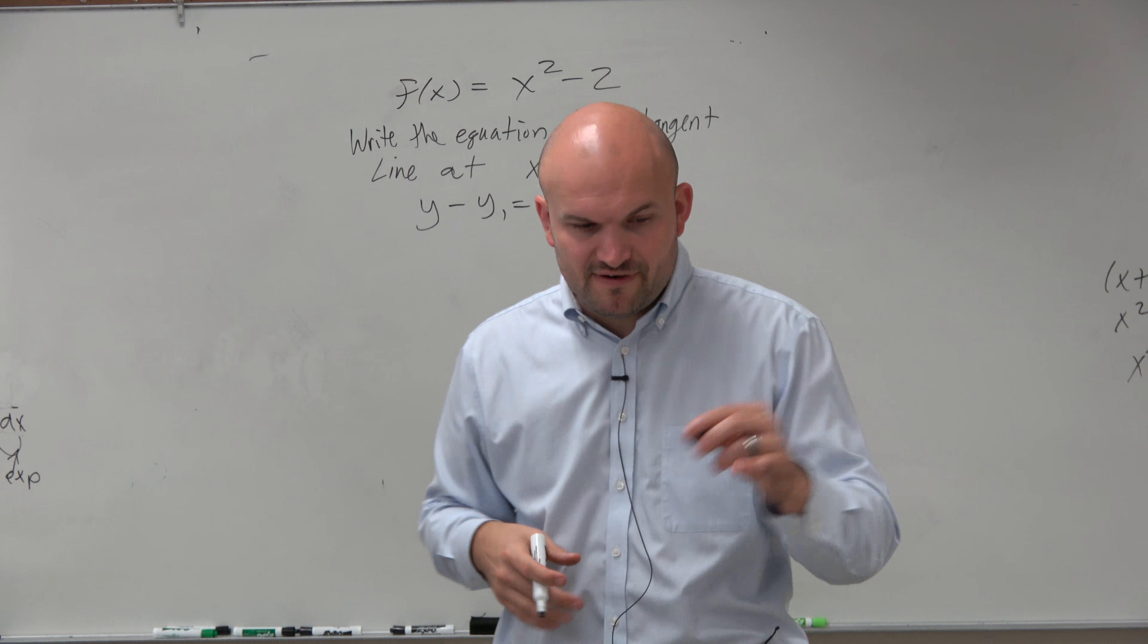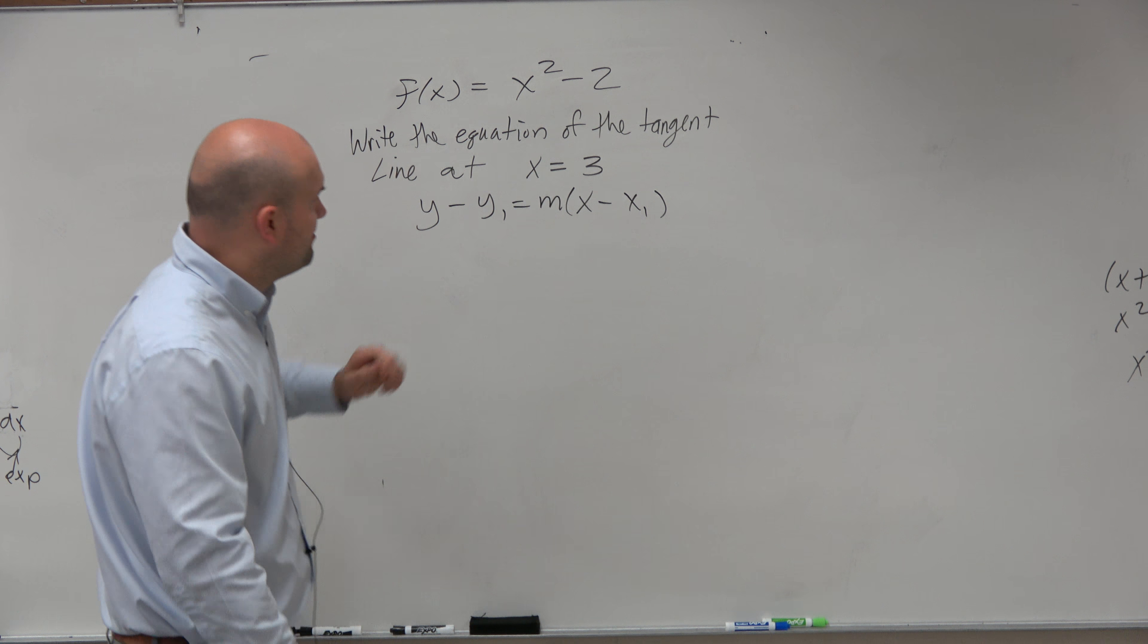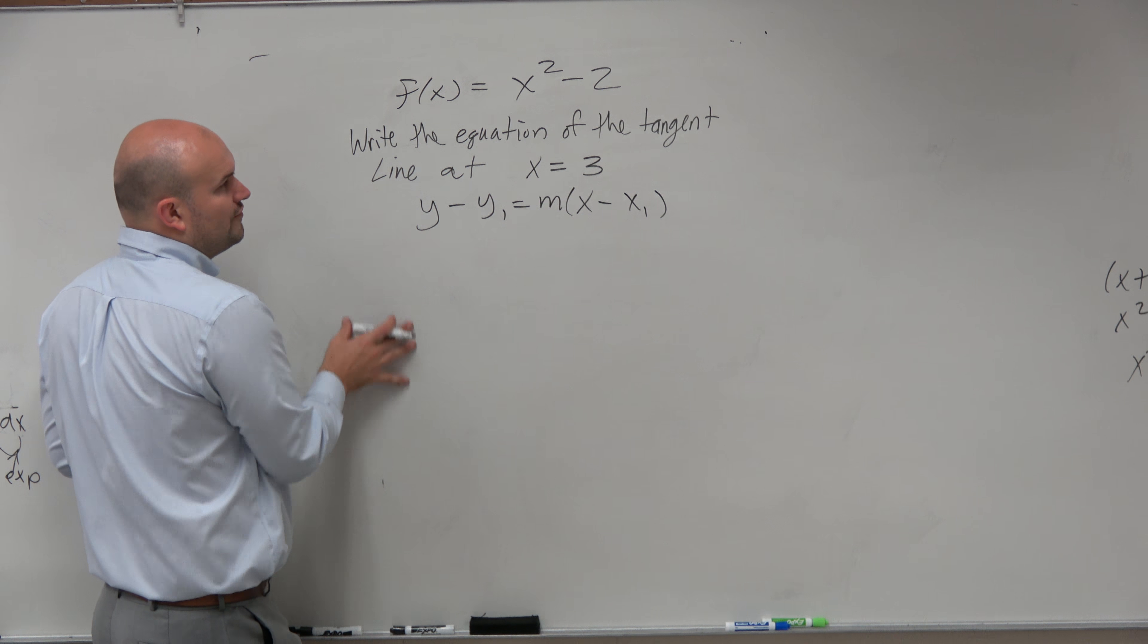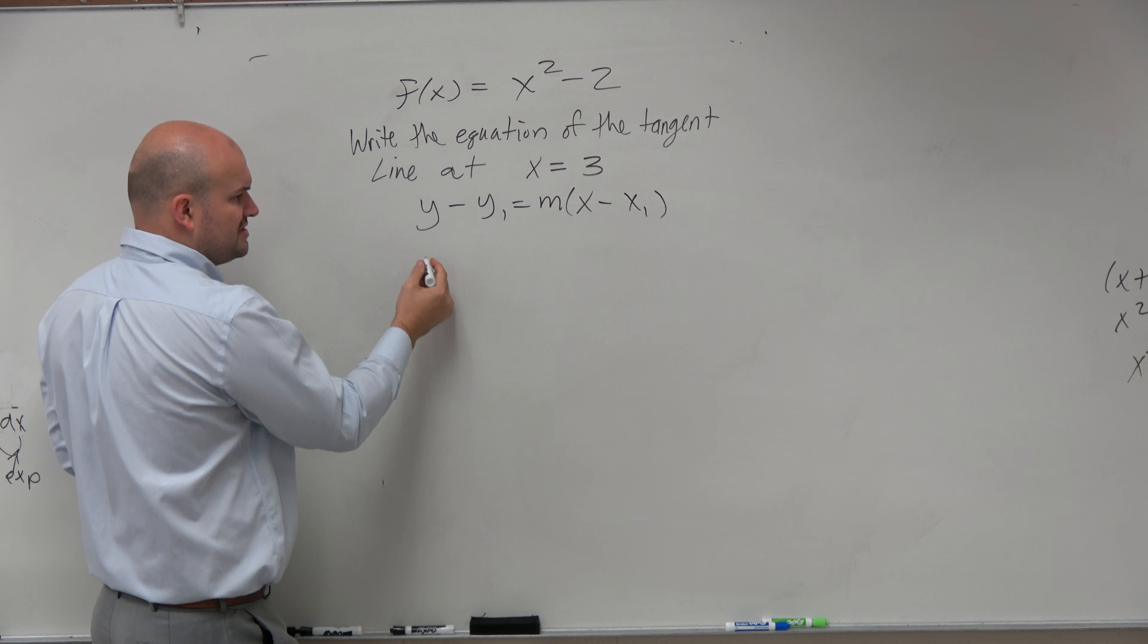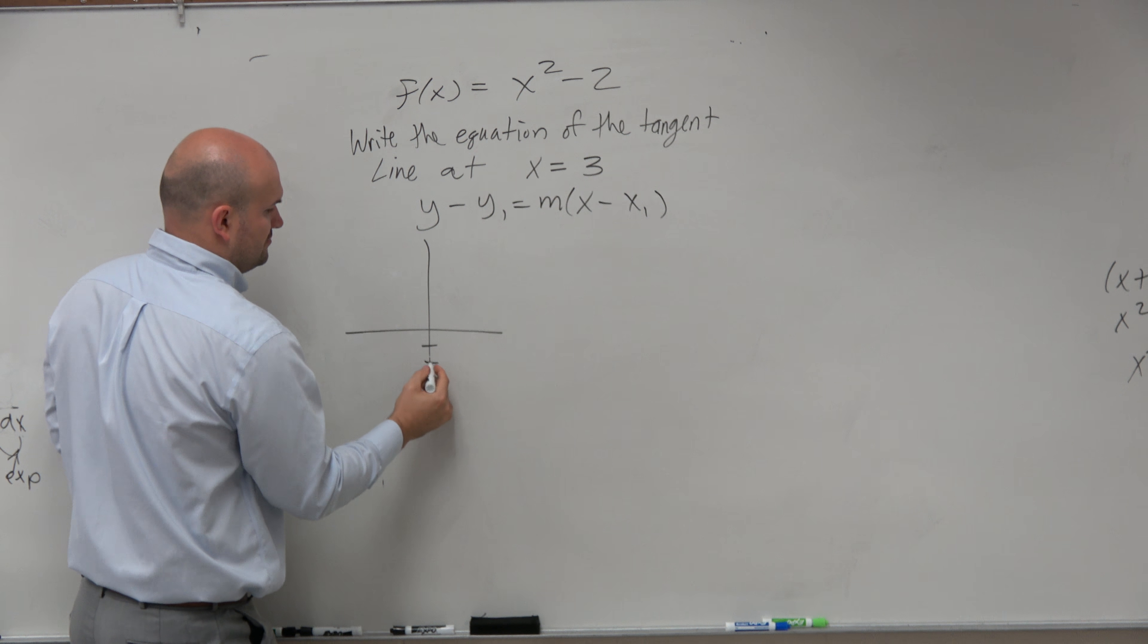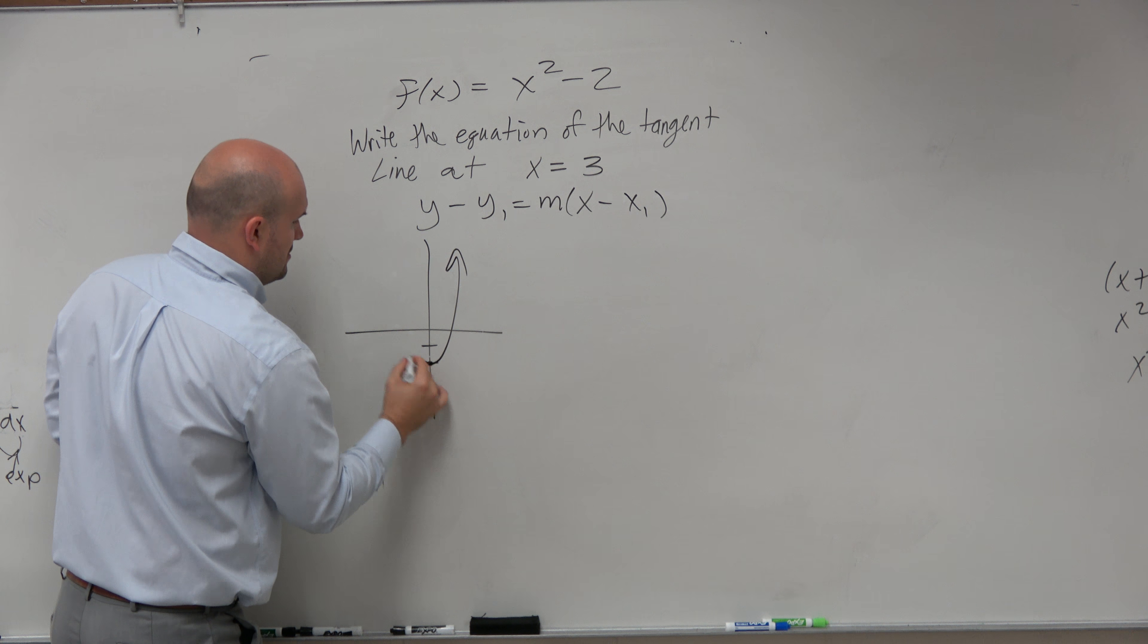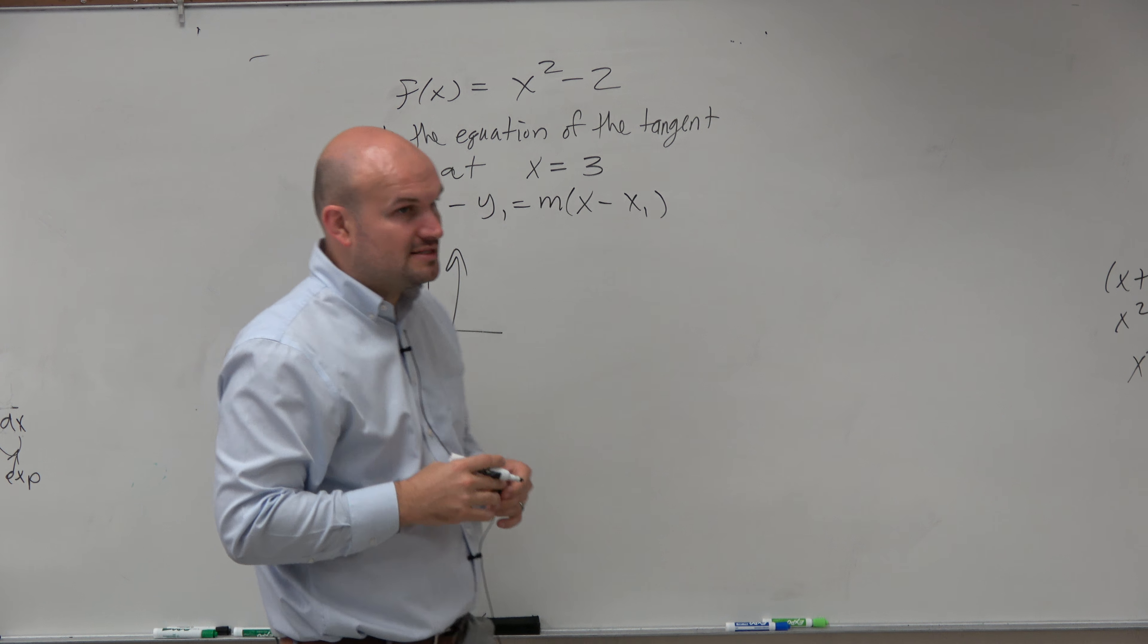If we want to find point-slope form on a problem like this, I'm choosing an easy problem so we can conceptually understand it. Let's graph x squared minus 2. It looks something like that.